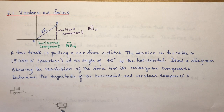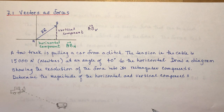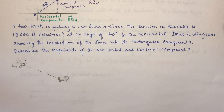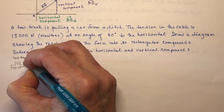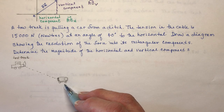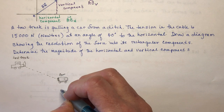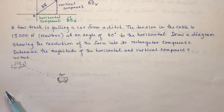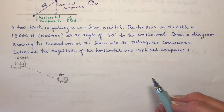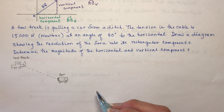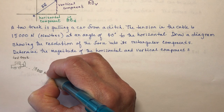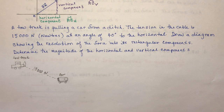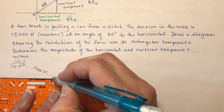We're going to use that when we talk about some other examples. In this case we're going to do a tow truck question. My drawings are never very accurate — this is a tow truck, and this is supposed to be a car in a ditch. So: a tow truck is pulling a car from a ditch; the tension in the cable is 15,000 newtons at an angle of 40 degrees to the horizontal.